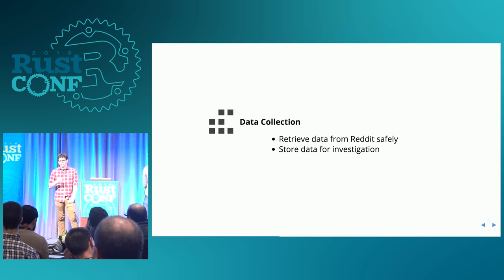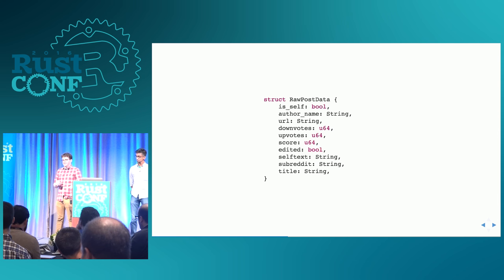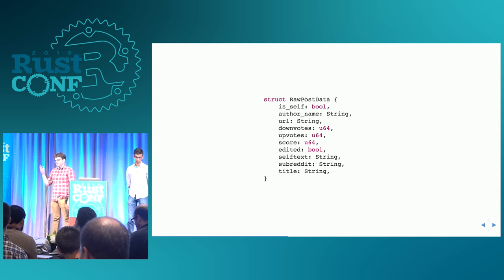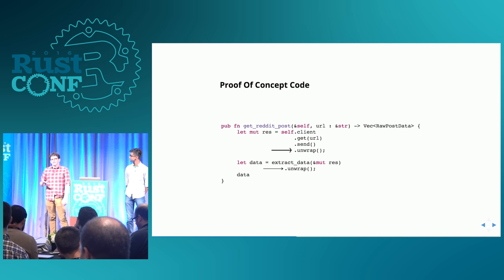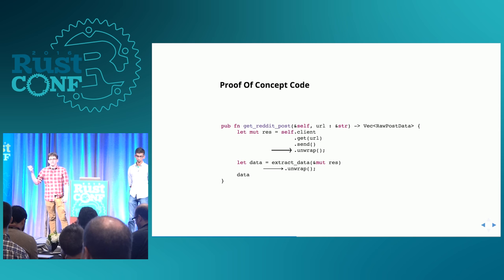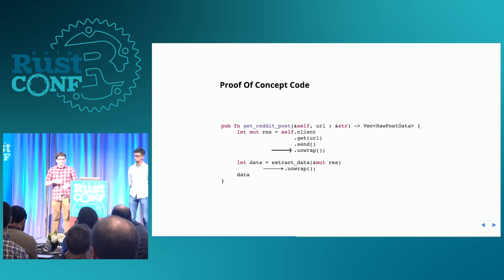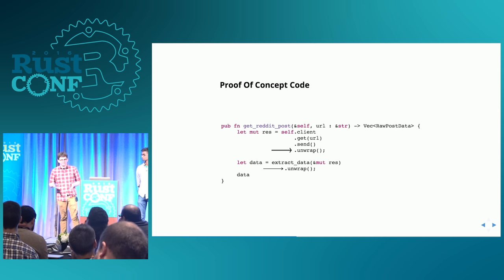For the first stage, we need to collect our data and store it. Our data basically mimics what the Reddit API returns — author, text of the post, score, things like that. The first time we ran this, we just wanted to get some data to start investigating quickly. The evidence of that is these unwraps in our codebase. Essentially what those say is: yes, this might fail — we're asserting that it doesn't, just crash the program otherwise. When you're collecting thousands of posts, you really don't want code like that.